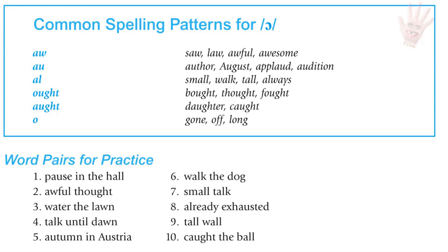Word pairs for Aw: pause in the hall, awful thought, water the lawn, talk until dawn, autumn in Austria, walk the dog, small talk, already exhausted, tall wall, caught the ball.